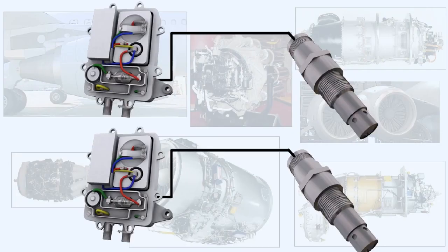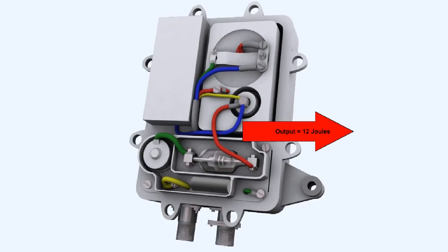All gas turbine engines have a dual ignition system fitted, which means that they have two high-energy igniter units. The high-energy igniter units each feed a separate igniter plug. High-energy ignition systems have an output of approximately 12 joules.